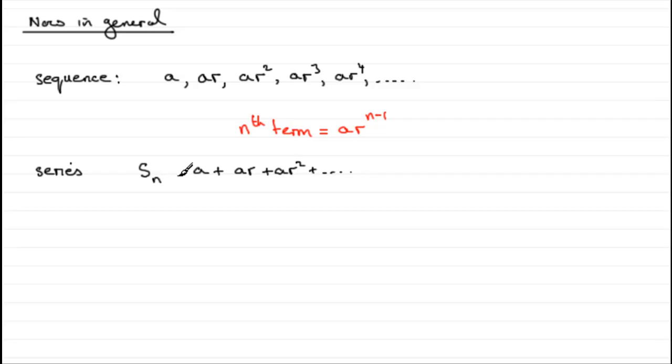We're going to use a standard letter for the summation of the first n terms. That letter is often written as s with a subscript n. It's the sum of the first n terms. So this is going to go all the way up to ar to the power n minus 1.